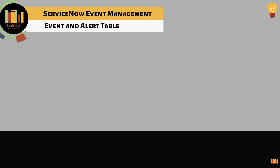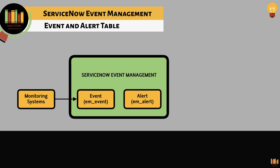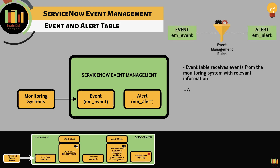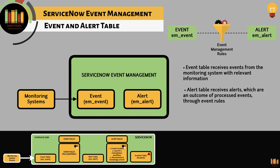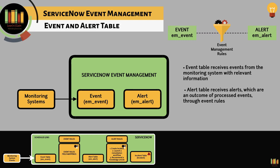The two most important tables within event management are bm-event, where events reside, and bm-alert, where alerts reside. The event table receives events from the monitoring system with relevant information about the issue. The alert table receives alerts, which are an outcome of processed events through event rules.